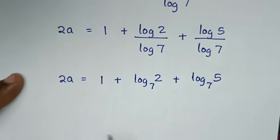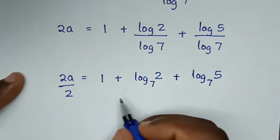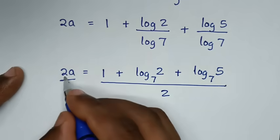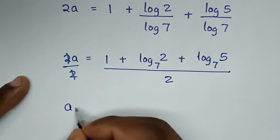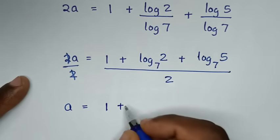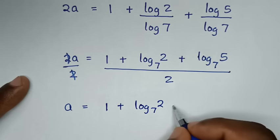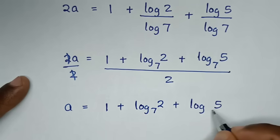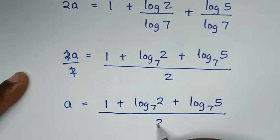Then from here, I will divide by 2 on both sides — over 2 on this side and over 2 on that side, and these 2s cancel. So A is equal to 1 plus log base 7 of 2 plus log base 7 of 5, all over 2. This is the final answer for the value of A.